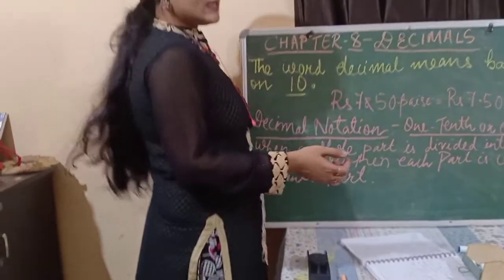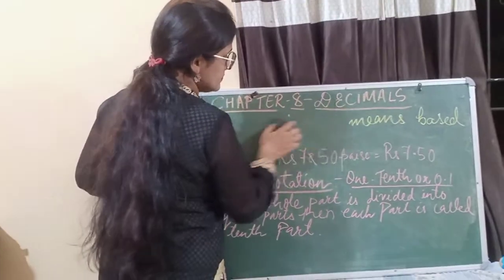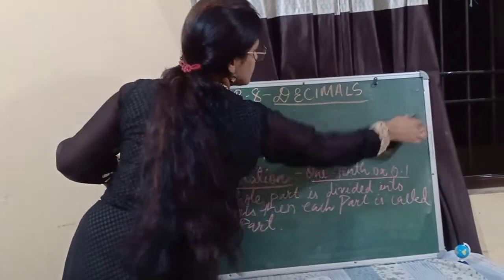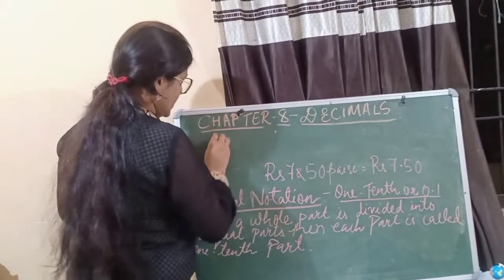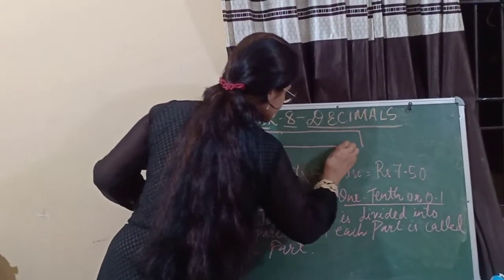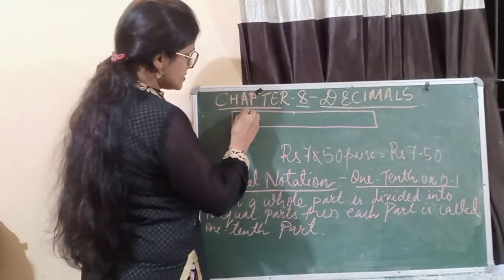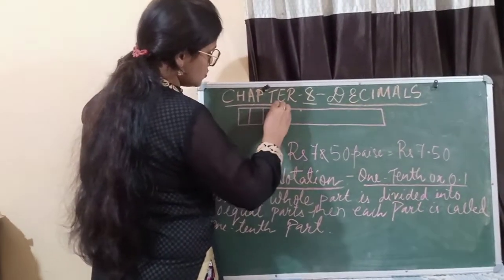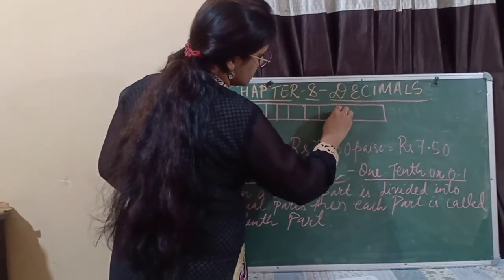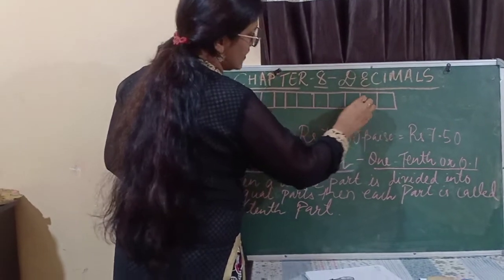Let's see, for example. In this rectangle, I am dividing this rectangle into 10 parts: 1, 2, 3, 4, 5, 6, 7, 8, 9, and 10.